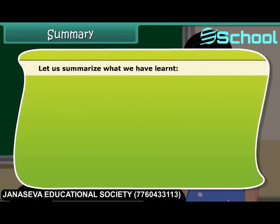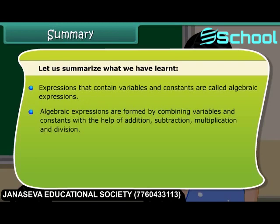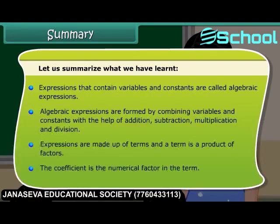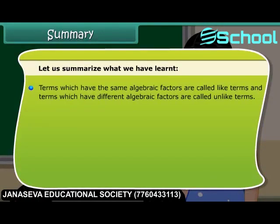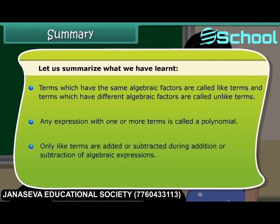Let us summarize what we have learned. Expressions that contain variables and constants are called algebraic expressions. They are formed by combining variables and constants using addition, subtraction, multiplication and division. Expressions are made up of terms, and a term is a product of factors. The coefficient is the numerical factor in a term. Terms with the same algebraic factors are called like terms; those with different factors are called unlike terms. Any expression with one or more terms is called a polynomial. Only like terms are added or subtracted during addition or subtraction of algebraic expressions.